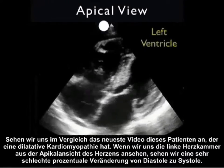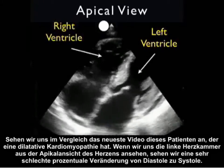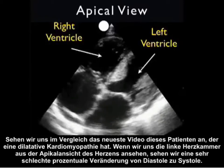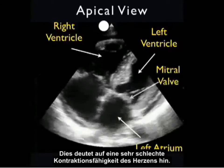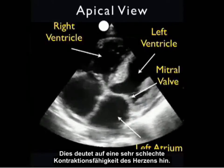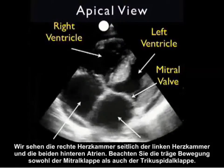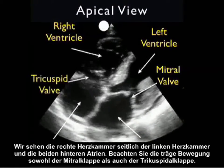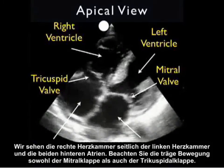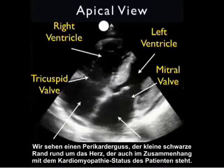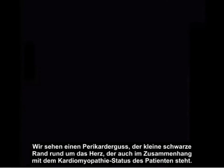Let's contrast that last clip with this patient who has a dilated cardiomyopathy. As we look at the left ventricle from the apical view of the heart, we see a very poor percentage change from diastole through systole, indicative of very poor contractility. We see the right ventricle to the side of the left ventricle and the two atria posterior. Notice the sluggish movement of both the mitral valve and the tricuspid valve. We see a little bit of pericardial effusion — that little black rim around the heart — also consistent with this patient's cardiomyopathy.